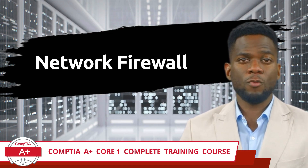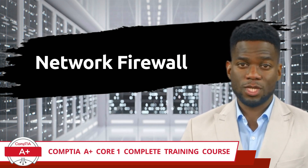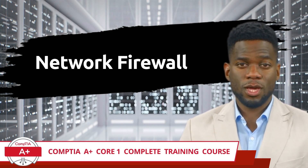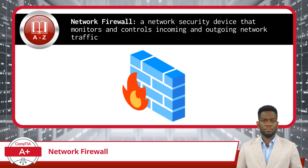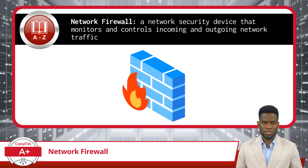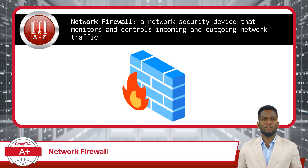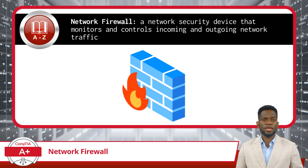CompTIA A Plus Core 1 Complete Training Course, Exam Objective 2.2: Compare and Contrast Common Networking Hardware — Network Firewall. Let's imagine our computer network as a fortress. Just like a fortress has protective barriers and guards, a computer network needs a way to safeguard against unwanted intrusions and threats. This is where network firewalls come into play.